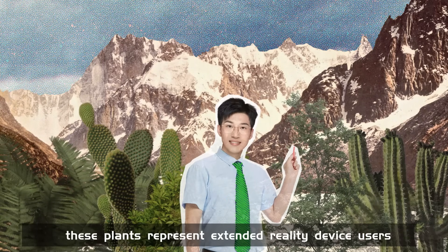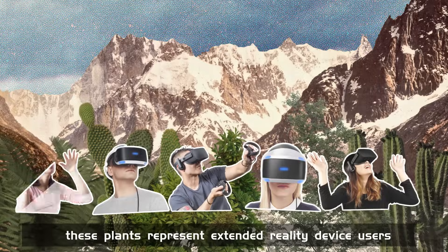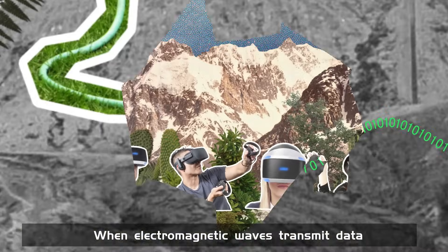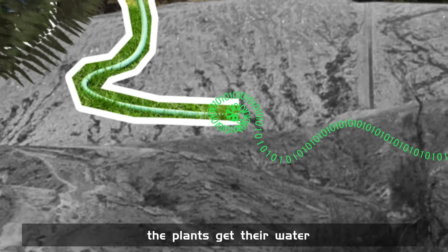Look, these plants represent extended reality device users. When electromagnetic waves transmit data, the plants get their water, which they need to flourish.